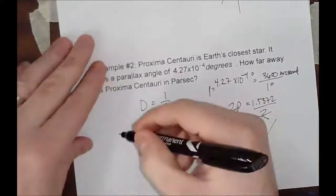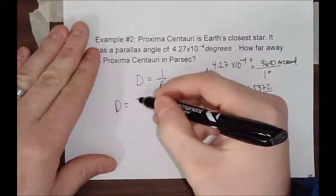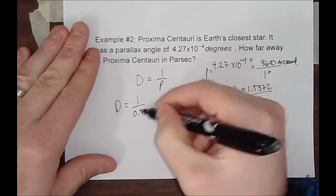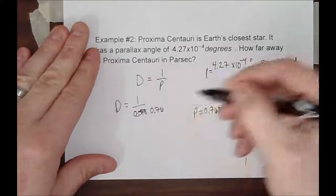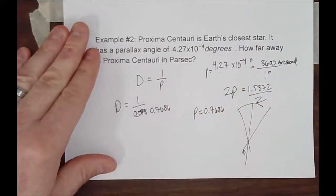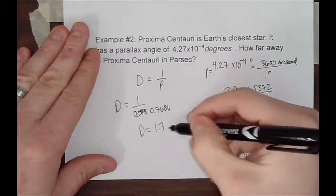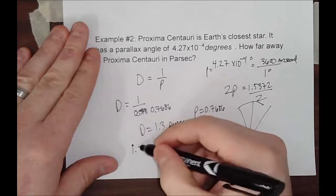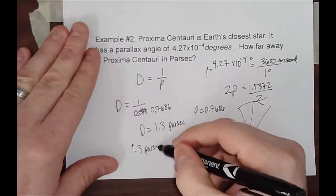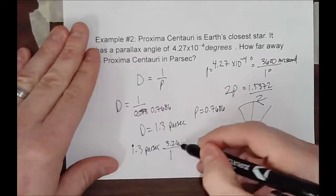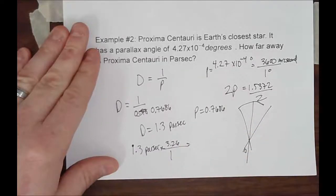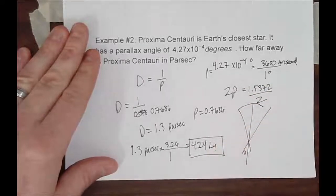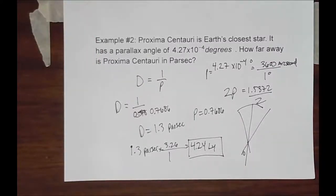So, our distance in this case, this is a parsecs, 1 divided by 0.7686. So, 1 divided by that answer, and I get roughly a distance of 1.3 parsecs. And, remember, that's a very, very large unit. If you want to do that in light years, 1.3 parsecs. 1 parsec is equal to 3.26 light years. And, that gives me approximately 4.24 light years. So, that is pretty much how far away Earth's closest star is. So, I hope you enjoyed this video, and please give me the thumbs up. Thank you.